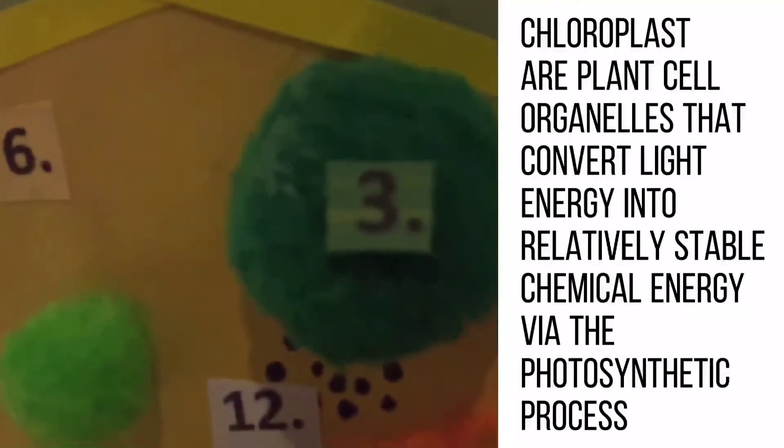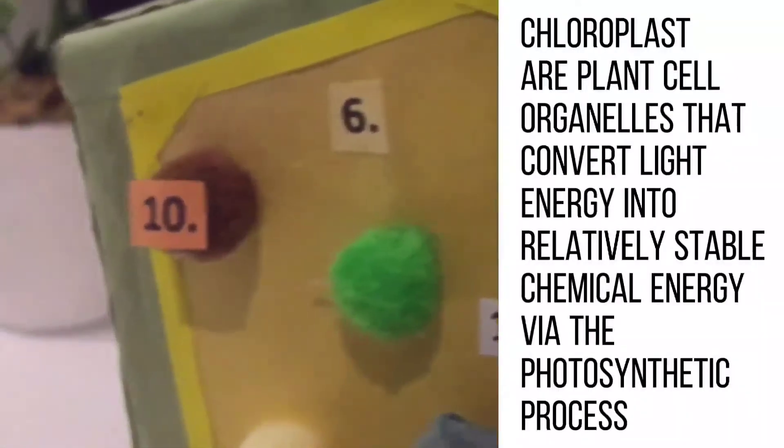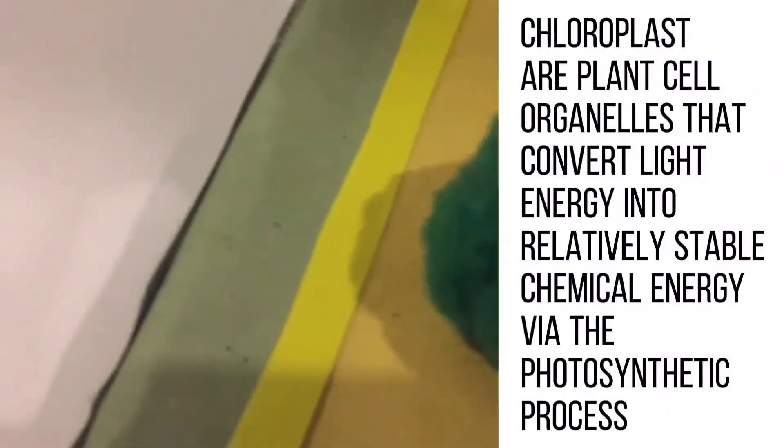Chloroplasts are plant cell organelles that convert light energy into relatively stable chemical energy via the photosynthetic process.